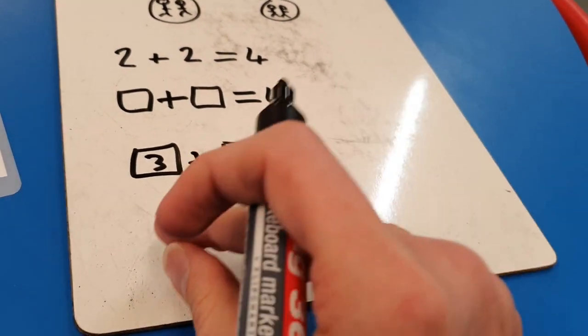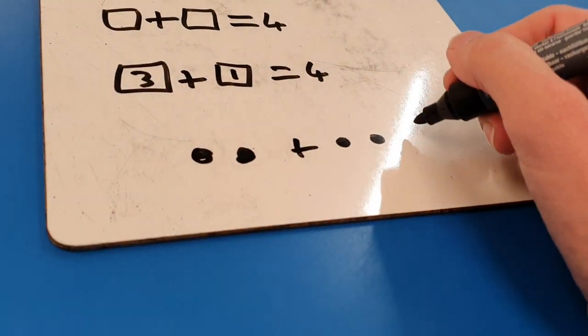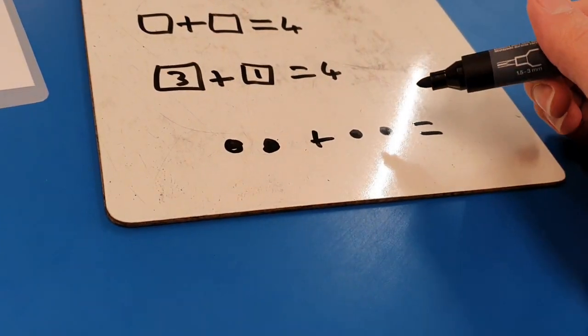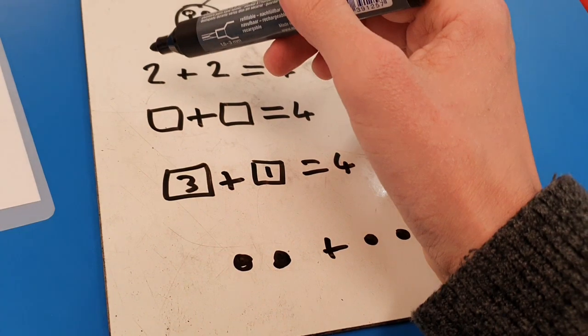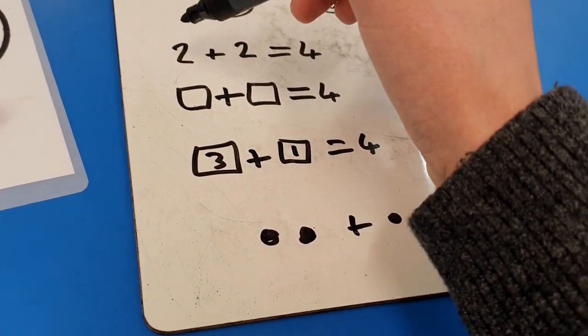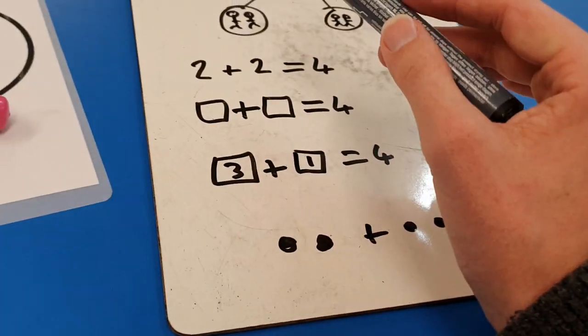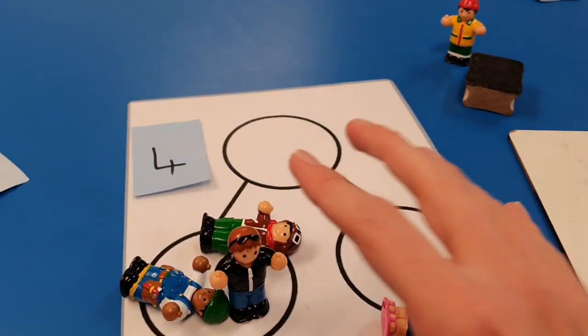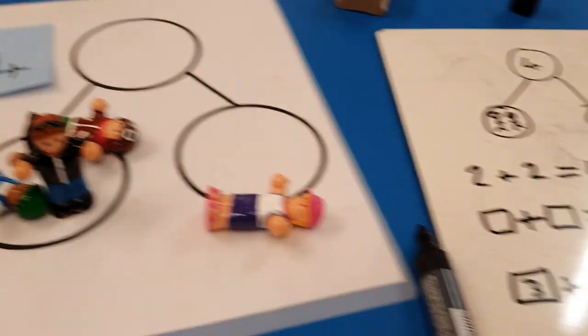And you can remind them that this is the add, that means you put these two groups together. Part add part equals whole. And you can remind them about the equal sign as well. Because representing as a number sum like this or as a subtraction sentence like this, that's quite tricky and we are very much still in the practical.